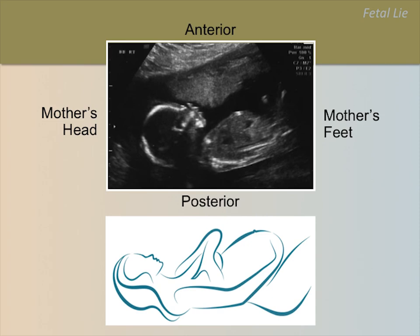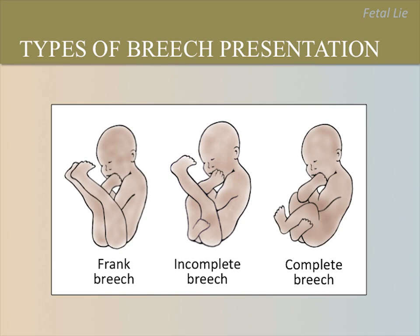A breech fetus has its head toward the mother's head and buttocks toward the cervix on a sagittal scan. There are three types of breech presentation. The frank breech is the most common type, with hips flexed and knees extended — sometimes called the pike position — and the fetal buttocks are closest to the cervix. The next most common type is the incomplete or footling breech, which has one or both hips extended and a foot closest to the cervix. The complete breech is the least common, with hips and knees flexed — sometimes called the cannonball position. The incomplete breech imparts the highest risk during labor, followed by complete breech, then frank breech.